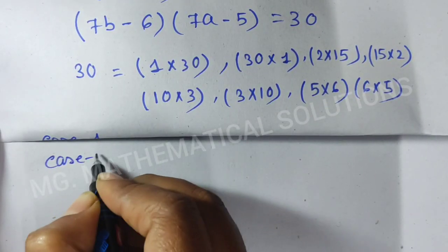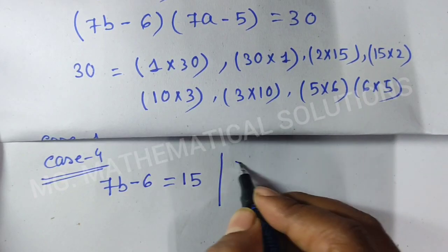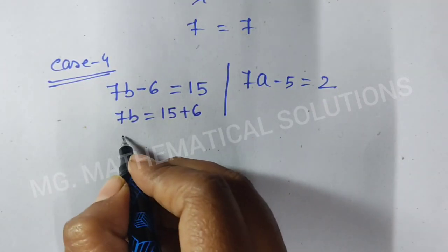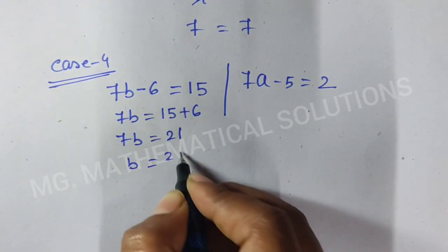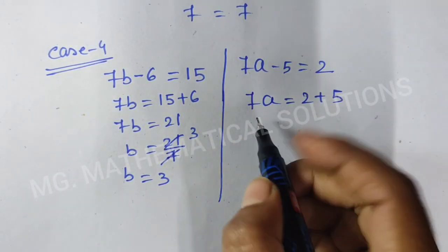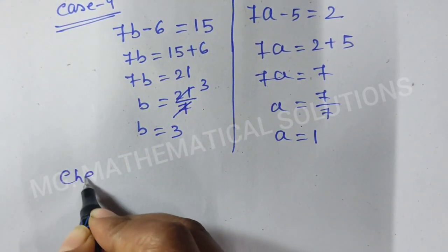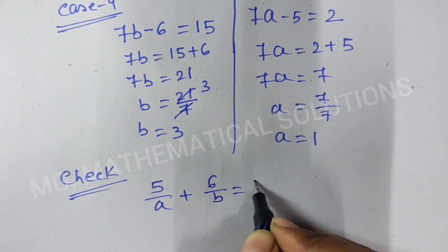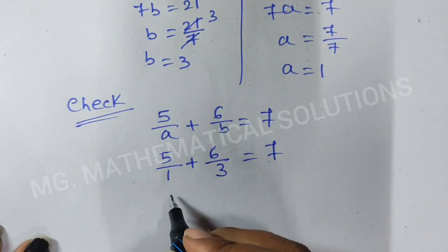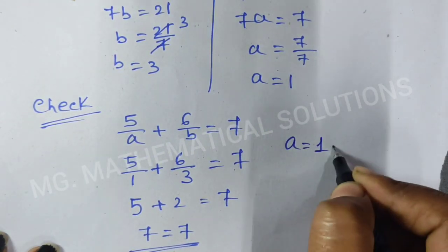Case 4: 7B minus 6 equals 15 and 7A minus 5 equals 2. So 7B equals 21, giving B equals 3. And 7A equals 7, giving A equals 1. Checking: 5/1 plus 6/3 equals 5 plus 2 equals 7. Left hand side equals right hand side. Fourth value: A equals 1 and B equals 3.